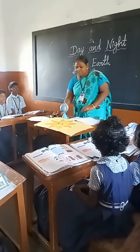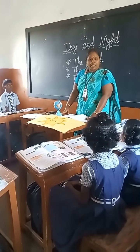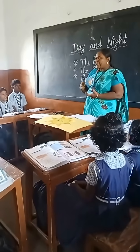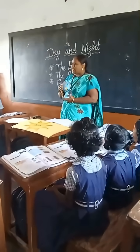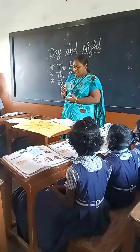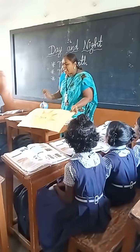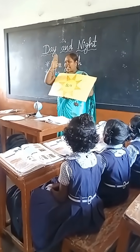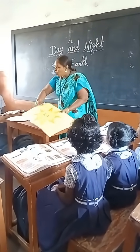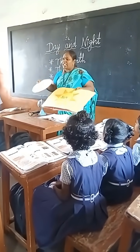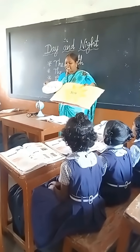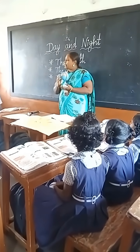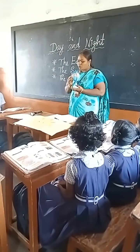Very good. Key points to remember, children. Earth rotates, causing day and night. The sun gives out light and heat. The moon reflects the sunlight. The earth is always moving.